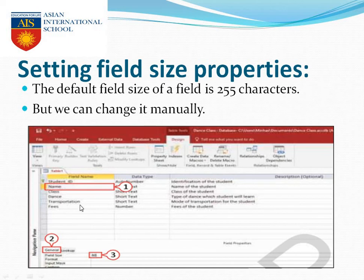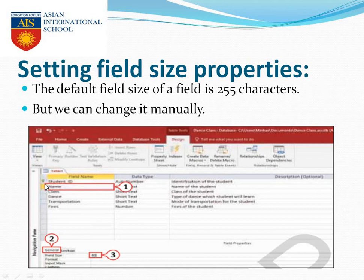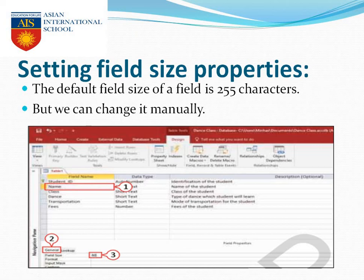Now the field size property. If you have already given a field name like 'name', by default it will be a certain size. If you want to change it, click on the field or go to the General button. Here you will get the field size where by default it is 255 characters. You can put more or less. So if you want to change the field size, go to the field you want to change, click on it, go to the General tab, and you will get the field size option to change it.